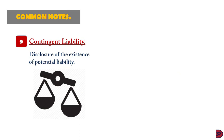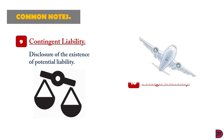Any liability whose occurrence hinges on the outcome of an uncertain future event is to be disclosed here, depending on the likelihood of happening. If it is probable or possible, it must be disclosed. Disclosing contingent liabilities enables users to be informed of a potential loss in the future if the impending events materialize.